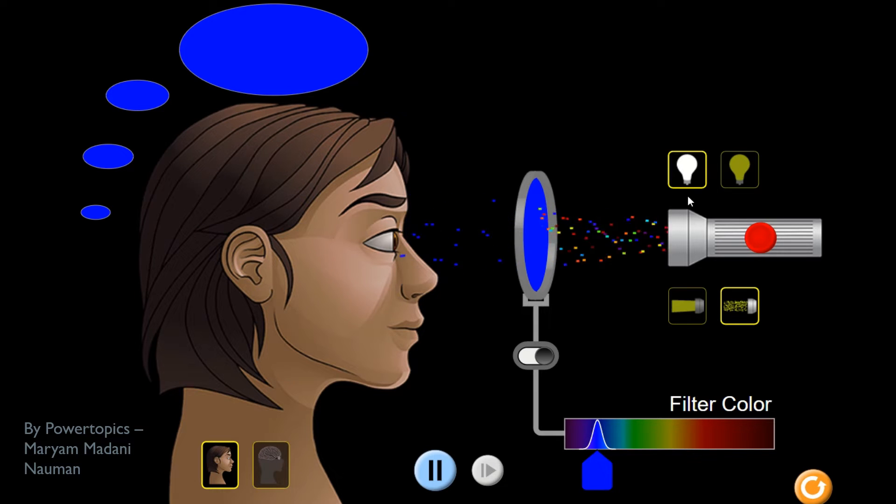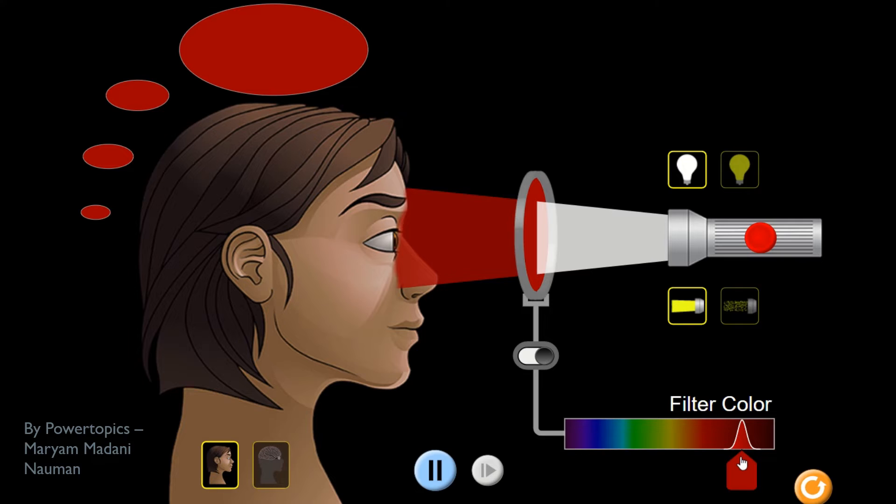We know that white light has seven different colors. And now let us see here, so only red light is transmitted from the colored filter and all the other six colors of light have been absorbed.